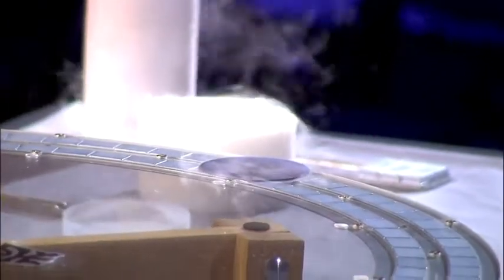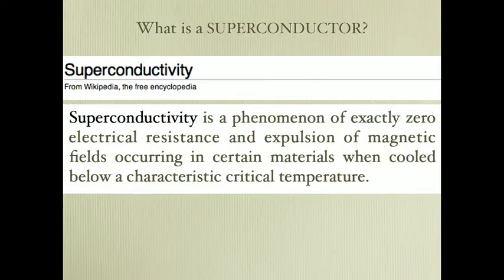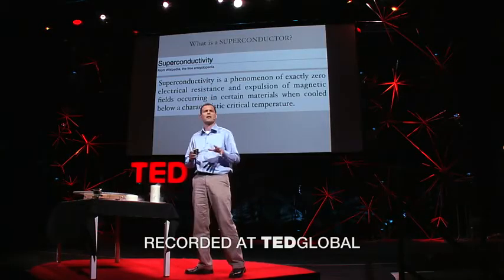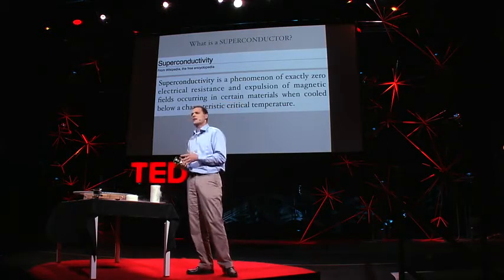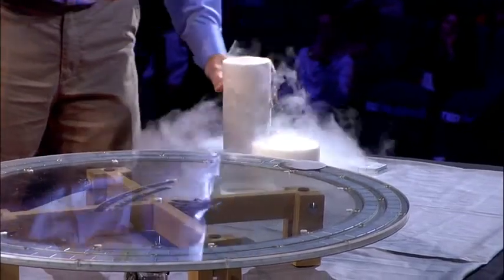The phenomenon you saw here for a brief moment is called quantum levitation and quantum locking. The object that was levitating here is called a superconductor. It's quite an old phenomenon — it was discovered 100 years ago. However, only recently, due to several technological advancements, we are now able to demonstrate quantum levitation and quantum locking.